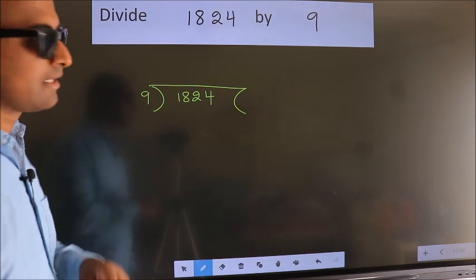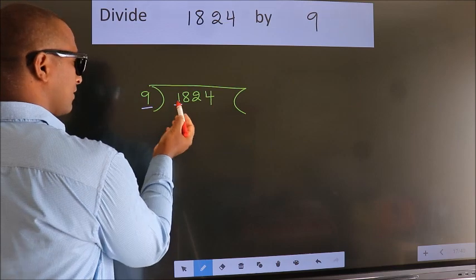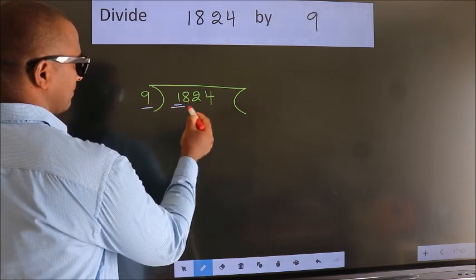Next. Here we have 1, here 9. 1 is smaller than 9, so we should take 2 numbers: 18.